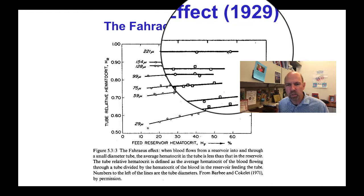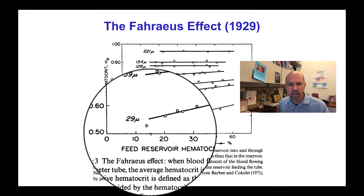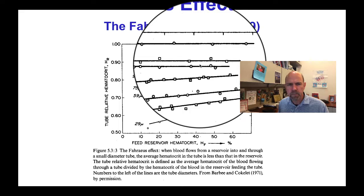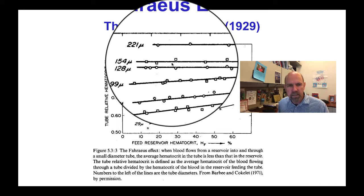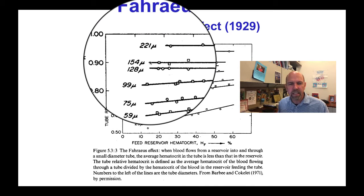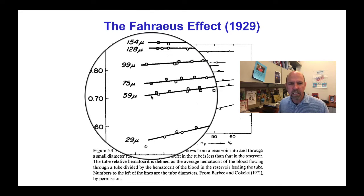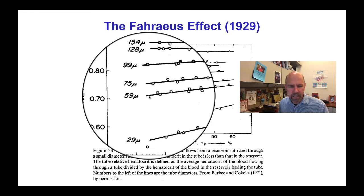As the tube gets narrower, the tube hematocrit relative to the reservoir hematocrit gets lower: only 90% at 154 microns, down to nearly 80% at 99 microns, and 75% at 59 microns.